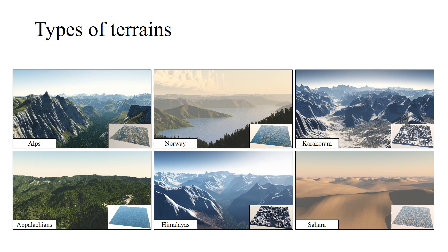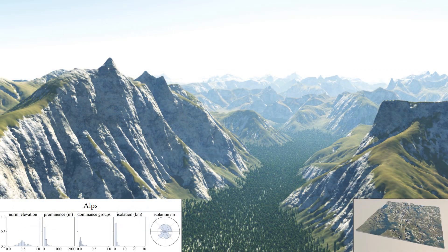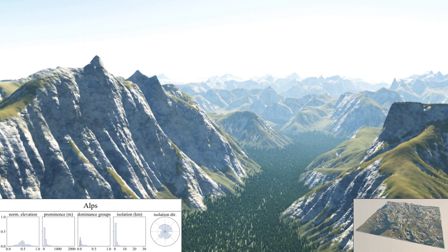The power of our approach lies in its ability to generate a vast variety of mountain scapes, ranging from gentle hills from the Appalachians to sharper ridges and peak ranges from the Himalayas. Here are some examples generated by our method.